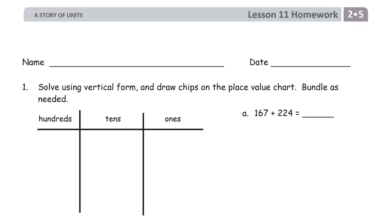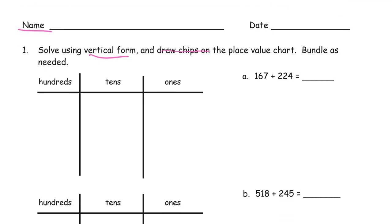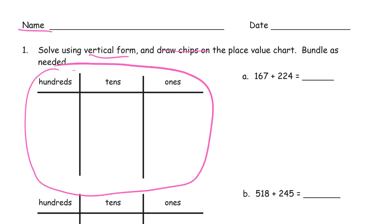Hello, this is the homework for lesson 11. This is module 5 of grade 2 and we're doing some vertical form addition and we're drawing chips on place value charts. Write your name on here first. This is the place value chart here. I'm going to do all my vertical math on the right side.